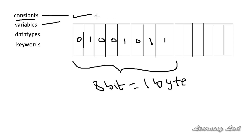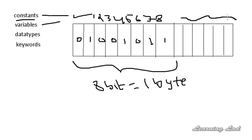All of you know that computer memory has its own address. For example, let's say this byte has address 12345678, and similarly each byte contains its own address. When we store some values in our computer memory and want to use them in our program, we need to refer to this address or location where our value is stored. Accessing a value stored in memory by using its address is very difficult, so what we do is give a name to this memory location so that we can easily remember and refer to it.